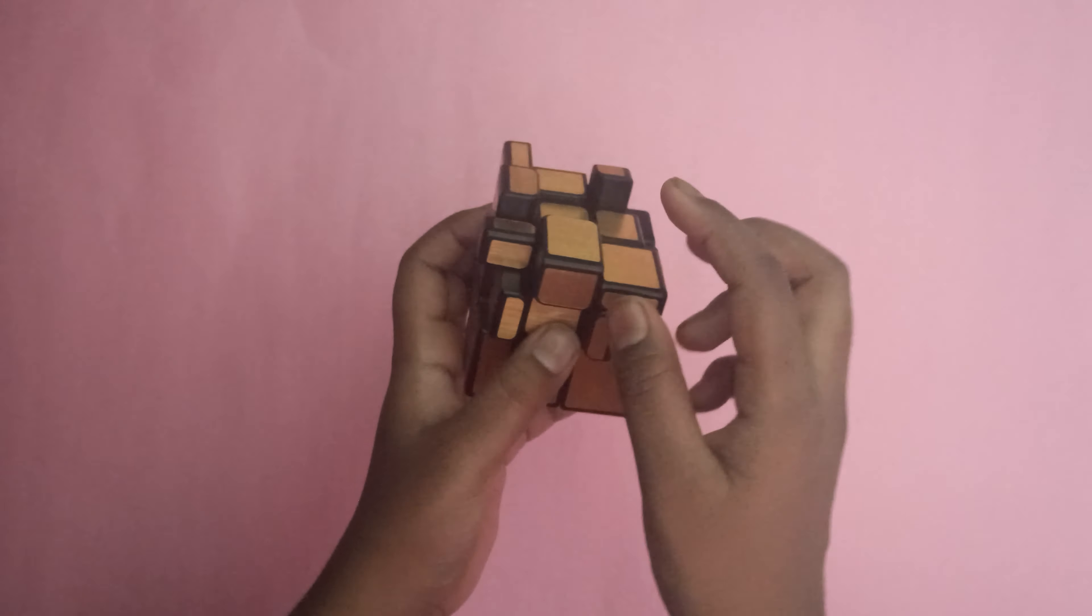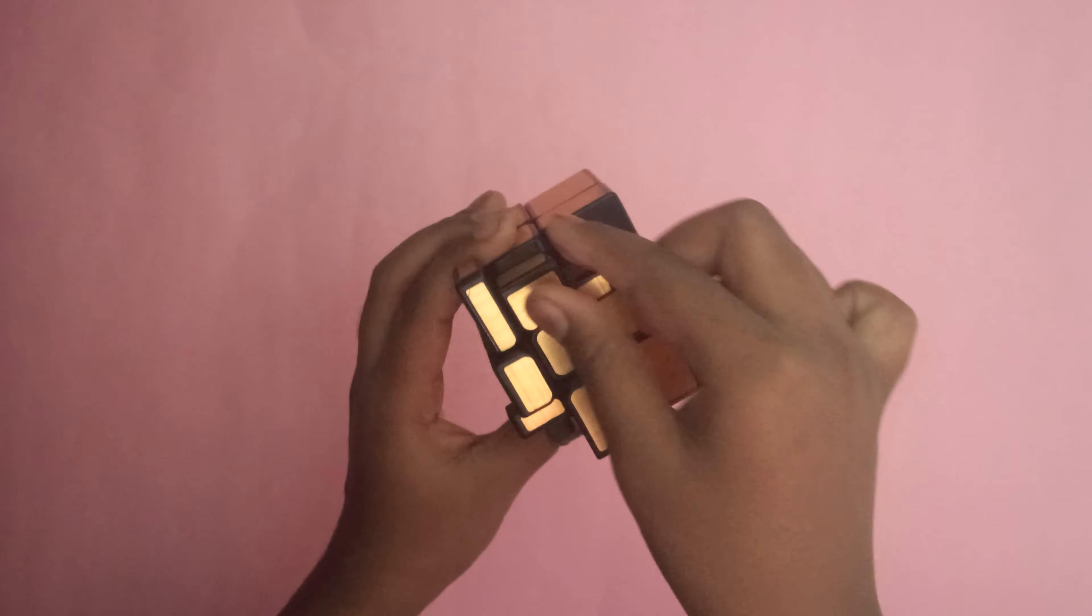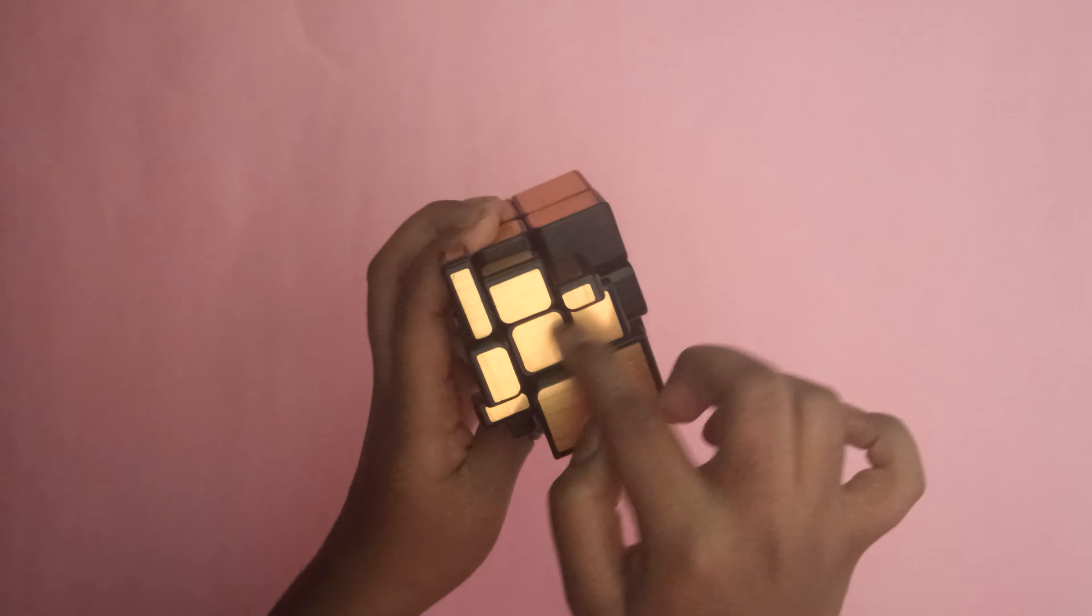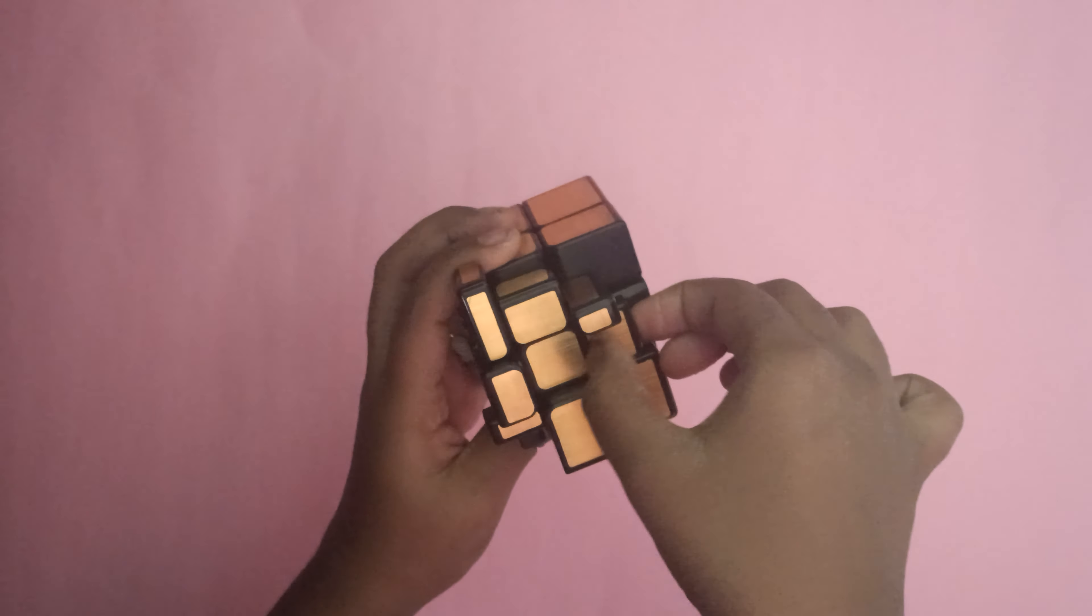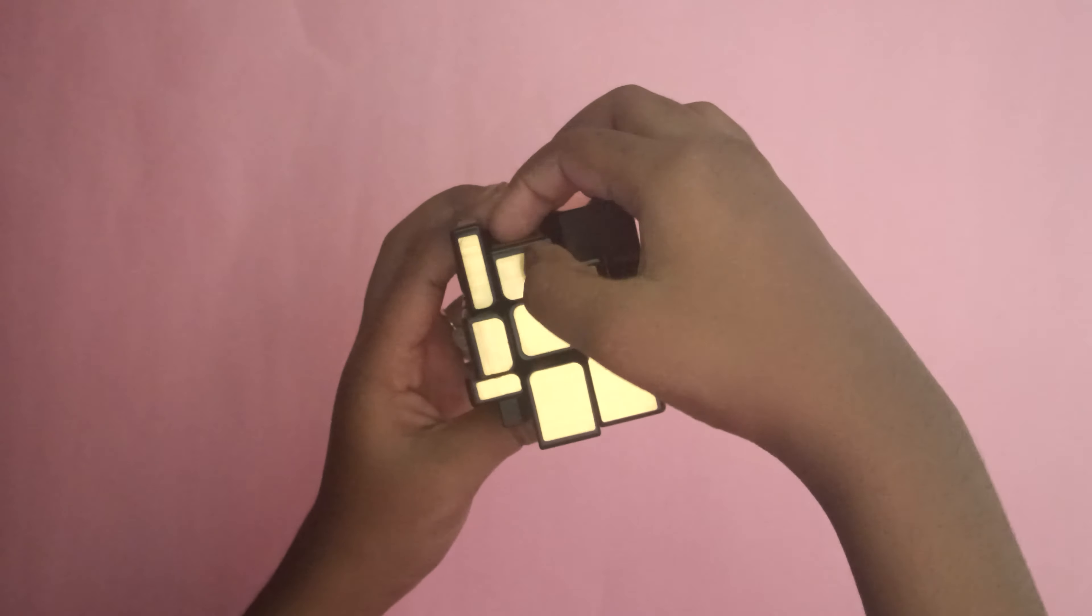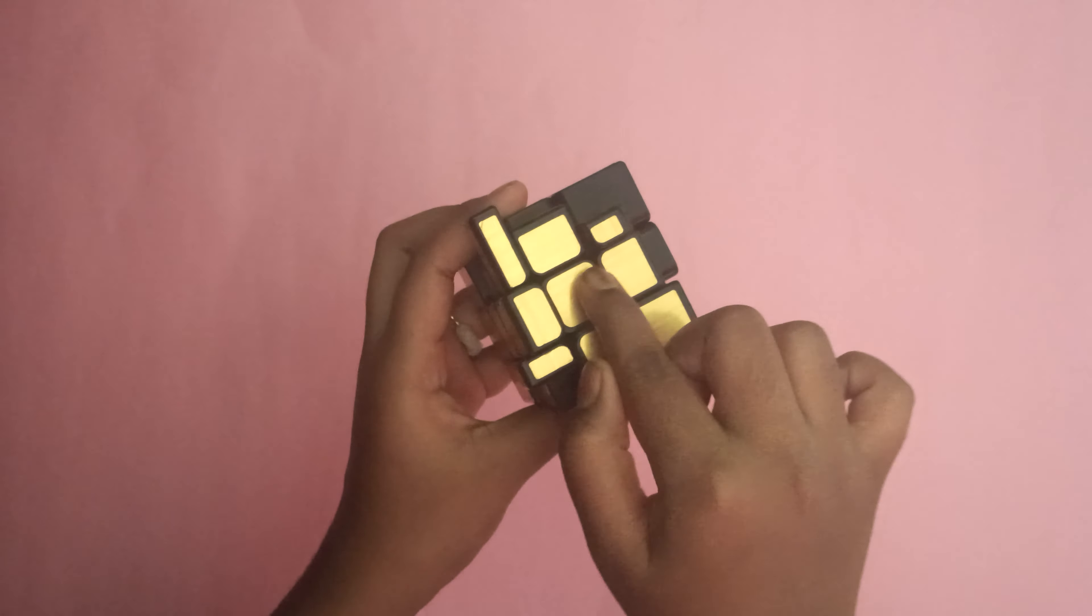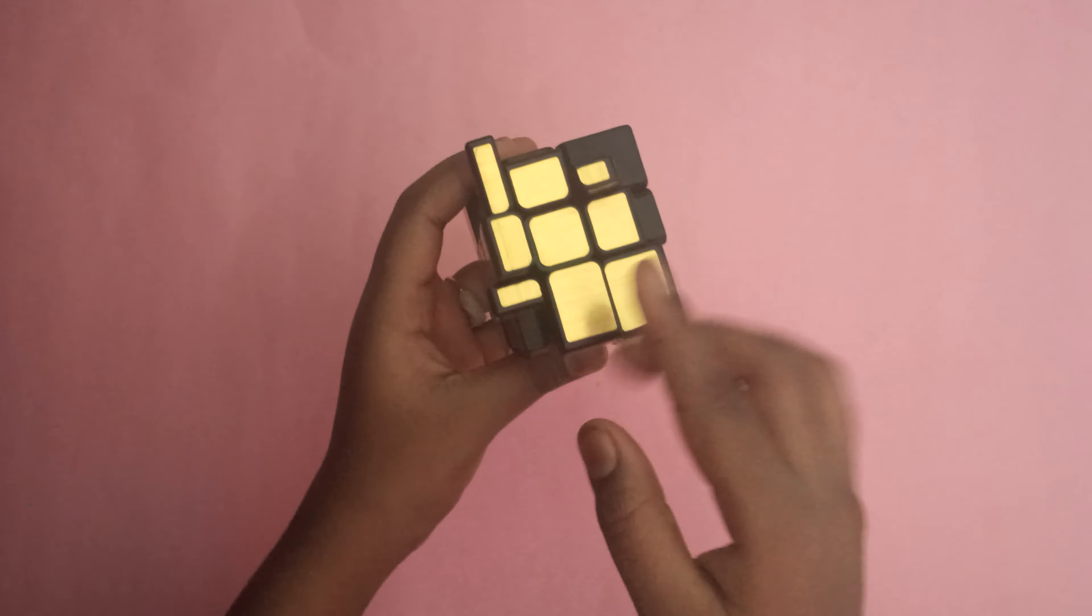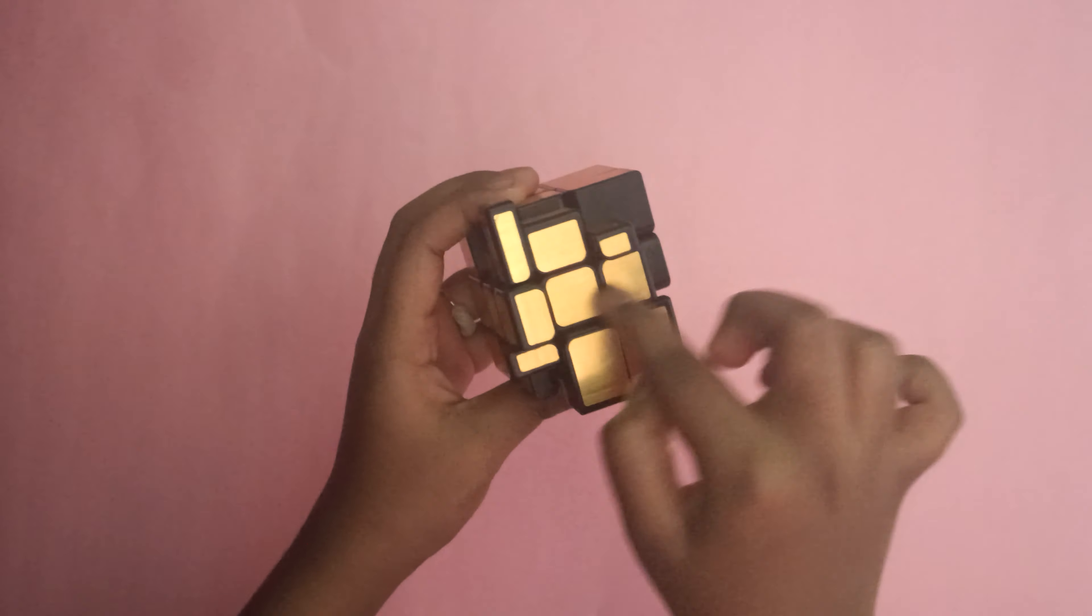For solving the second layer in mirror cube, observe the edges which are not matched to this center. This is matched, so this is not helpful for us. This is not matched, this is helpful. This is also not matched, this is helpful. This is also not matched, this is also helpful. I am referring to the level.